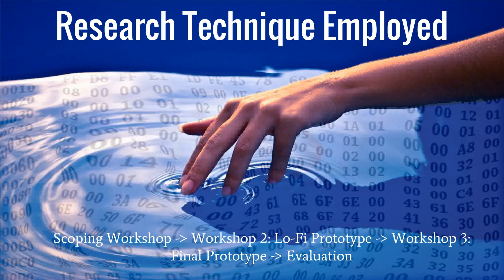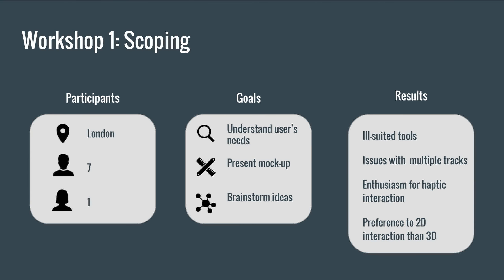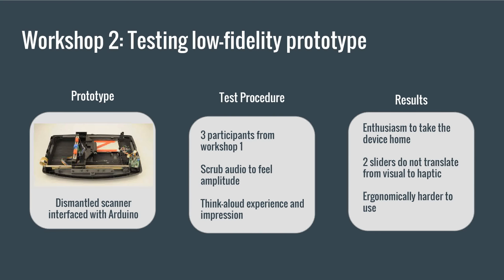The methodology employed consists of three workshops and a series of extended studio trials. The goal of the first scoping workshop was to identify existing methods of working and problems with them. Ideas for new solutions were also brainstormed. It was identified that participants felt current solutions were ill-suited, especially for working with multiple tracks, and they demonstrated enthusiasm towards haptic interactions but in 2D rather than 3D. With inputs from the scoping workshop, a low fidelity prototype was created from a dismantled scanner. The test procedure included loading audio files and asking participants to scrub through to feel the amplitude of the waveform. Participants were enthusiastic about the new device but pointed out that it was not ergonomically suitable to use.